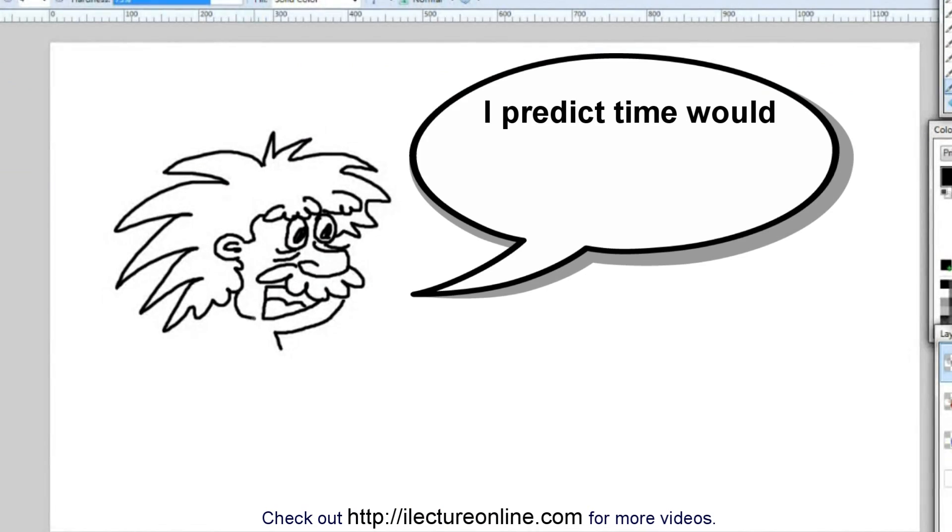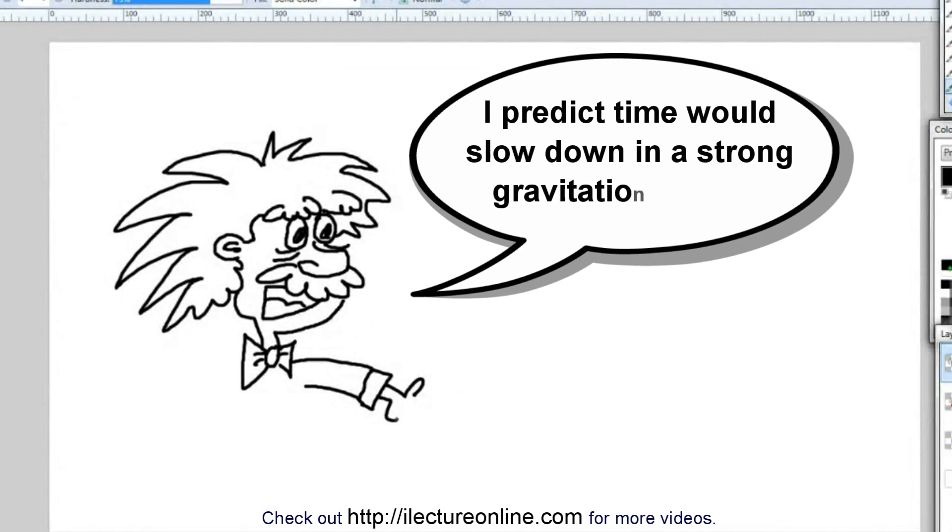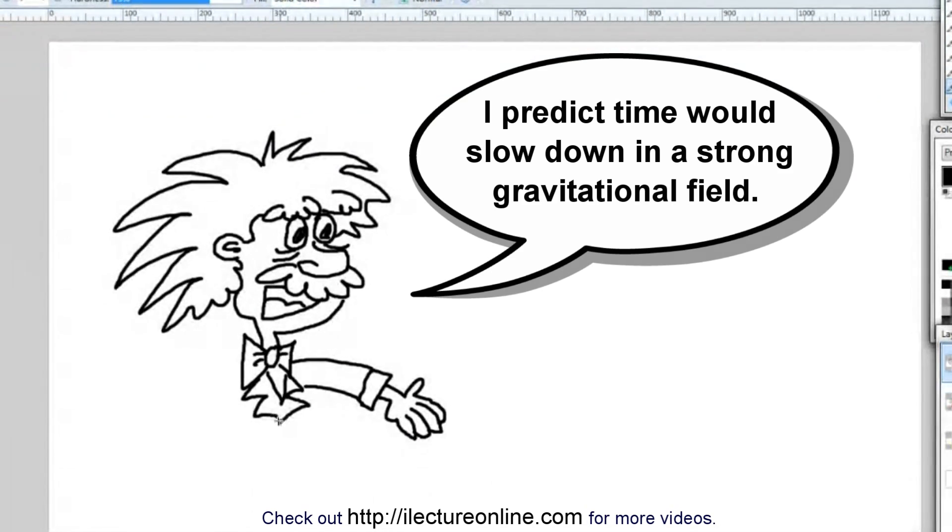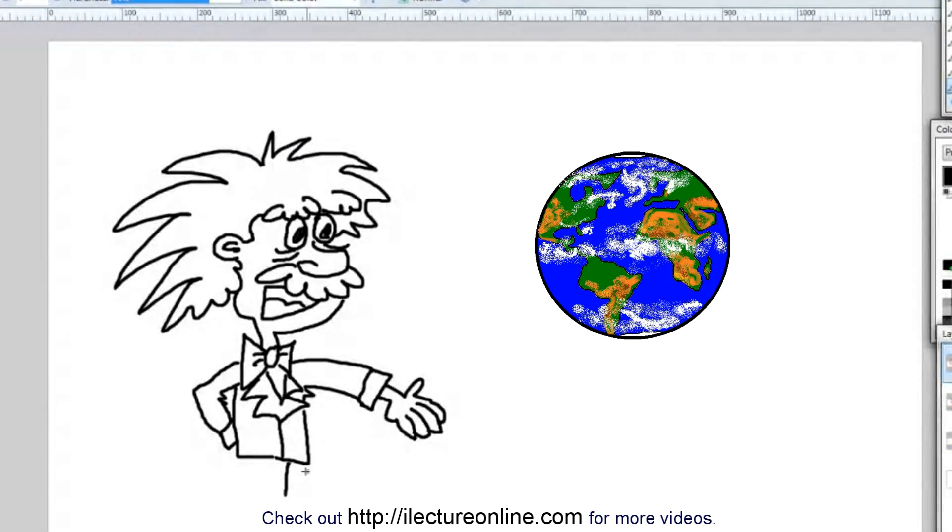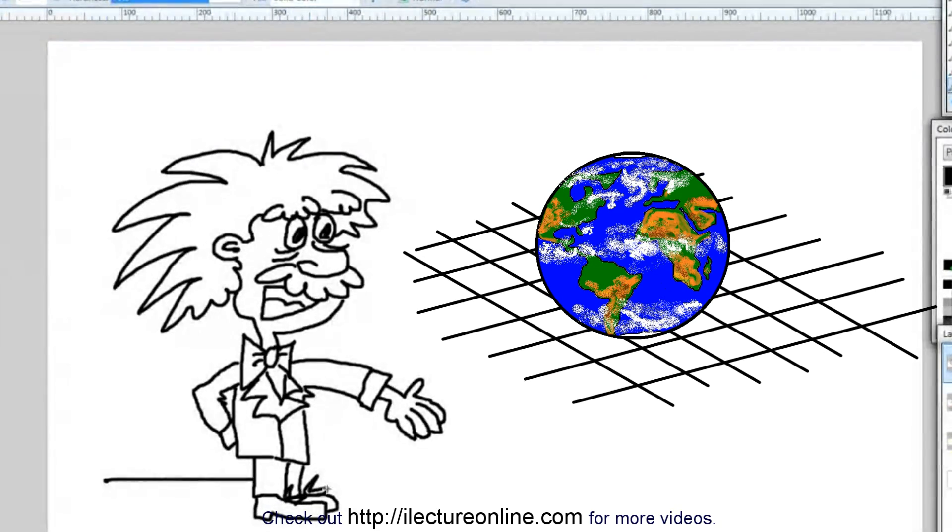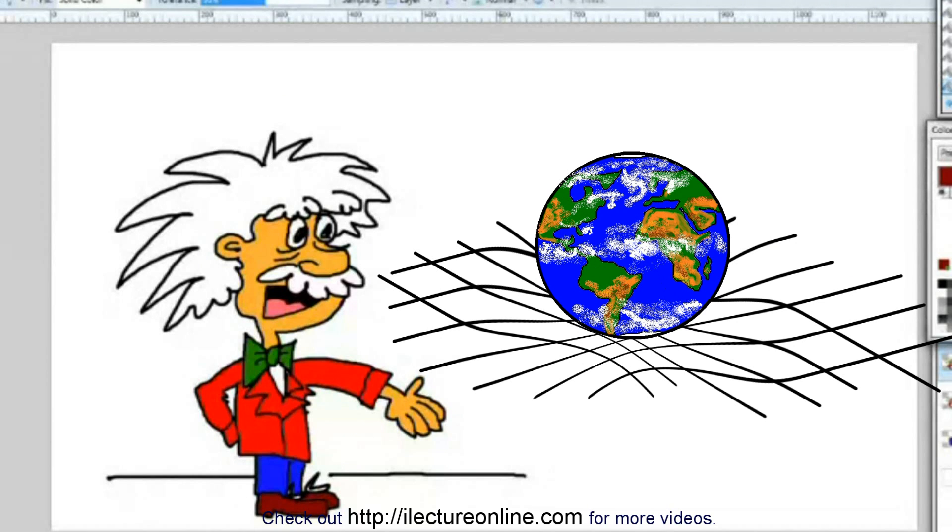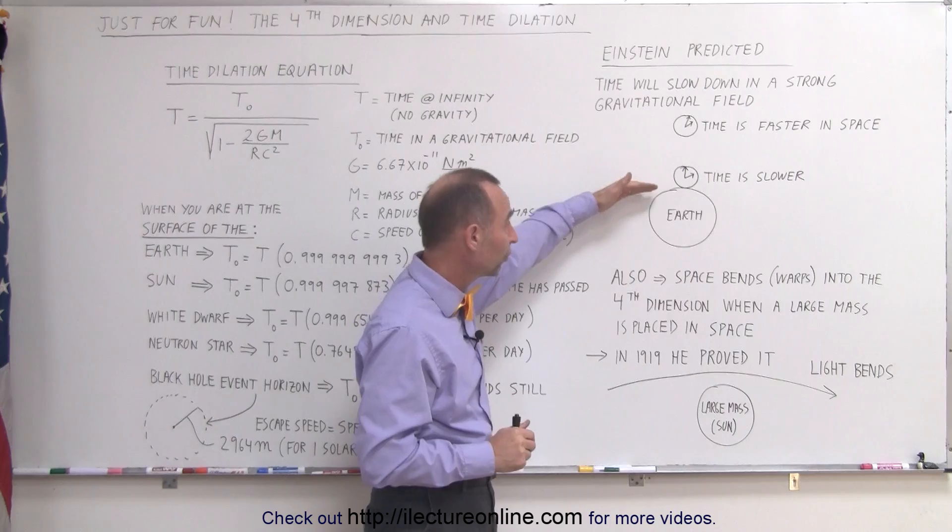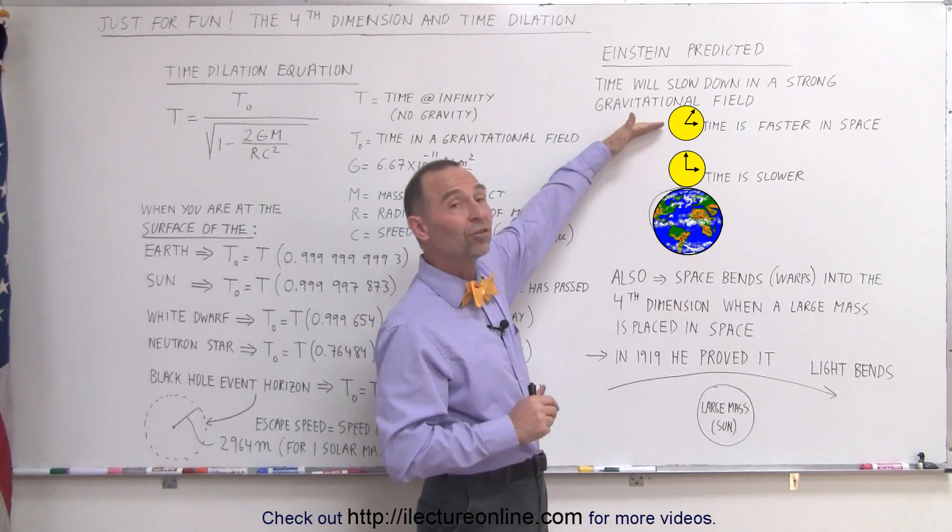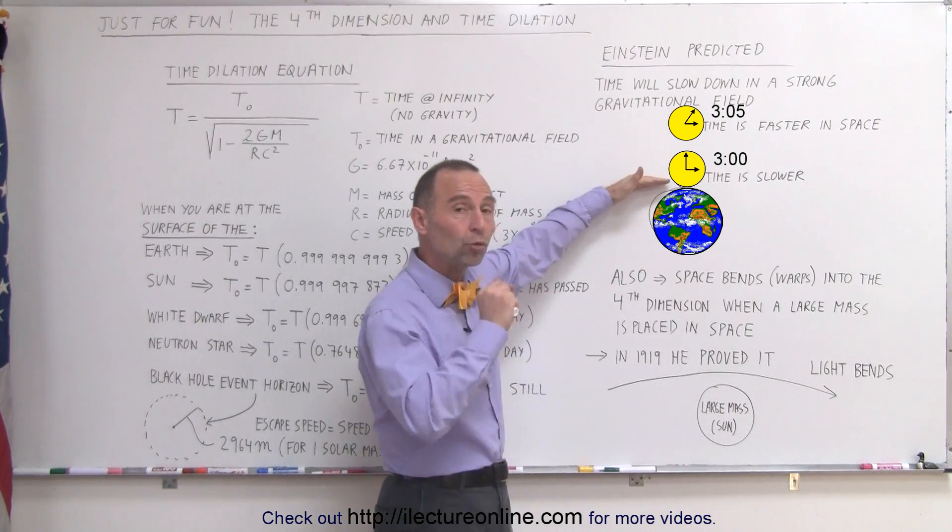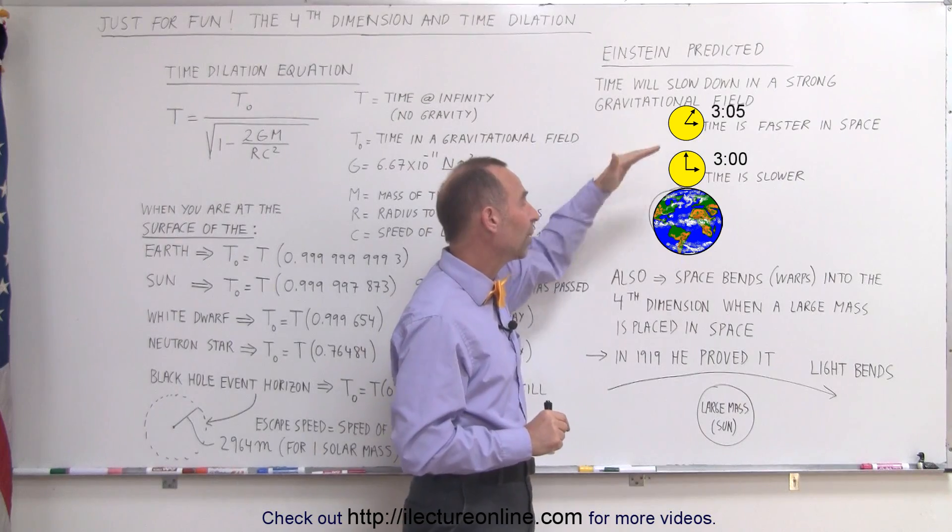He predicted that time would slow down in a strong gravitational field. In other words, when you place a large object like the Earth in space, space around it tends to change. It tends to bend or warp into the fourth spatial dimension. And that causes time to actually run slower. In other words, if you're on the surface of the Earth, as opposed to somewhere in space, time actually slows down relative to the time in space.